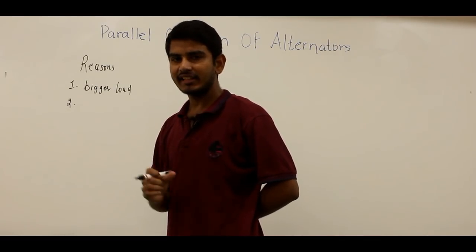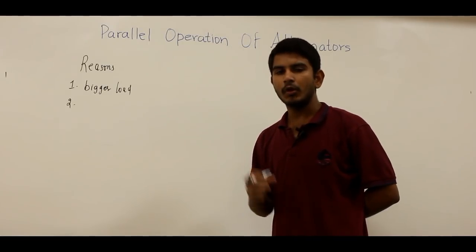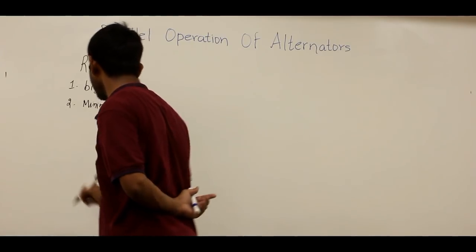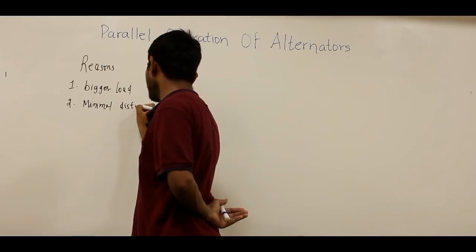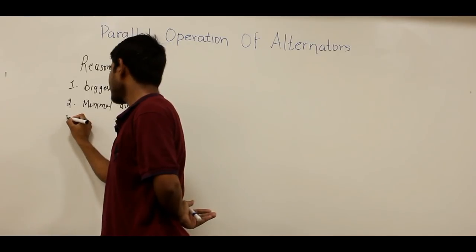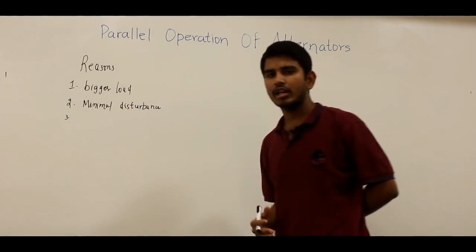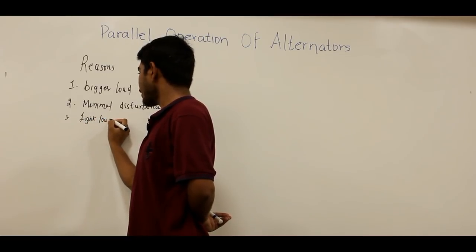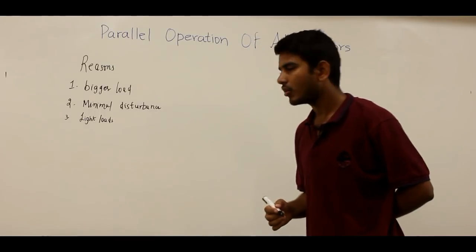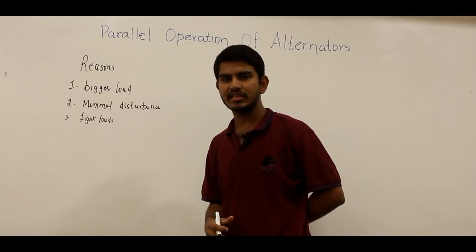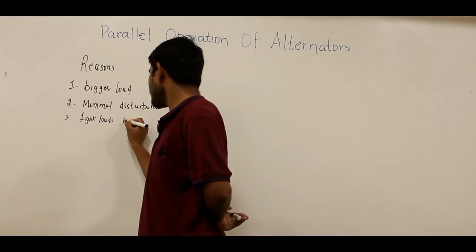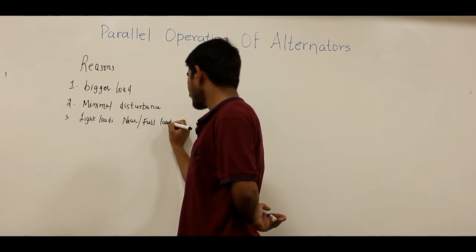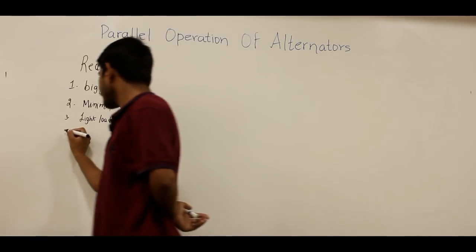With minimal disturbance of the initial installation, we can connect many machines in parallel. The third reason is that one or more alternators can be shut down during the period of light loads. During light loads, there is no requirement for many alternators connected in parallel, so we may shut down some, allowing the remaining alternators to be operated at near or full load, increasing the efficiency of the system.